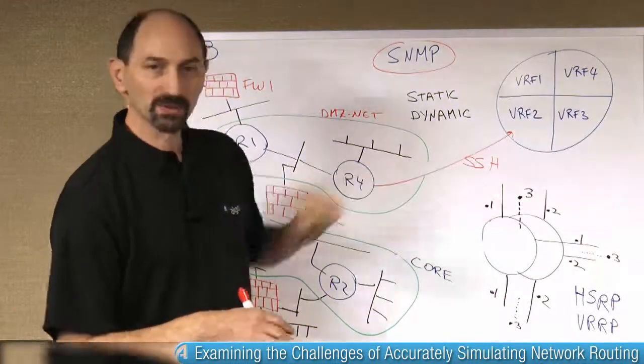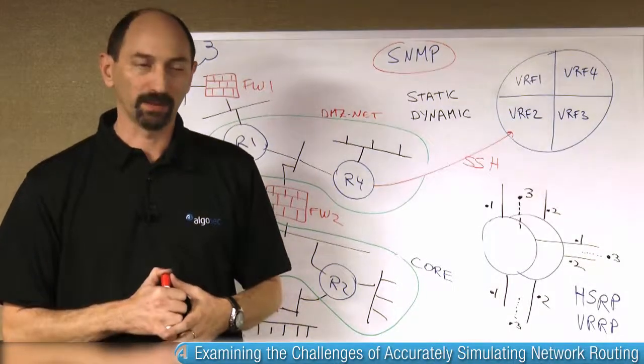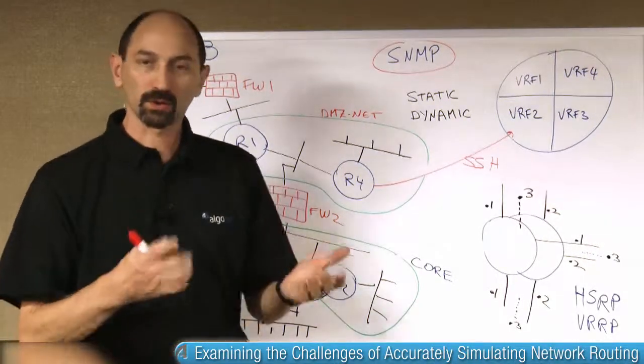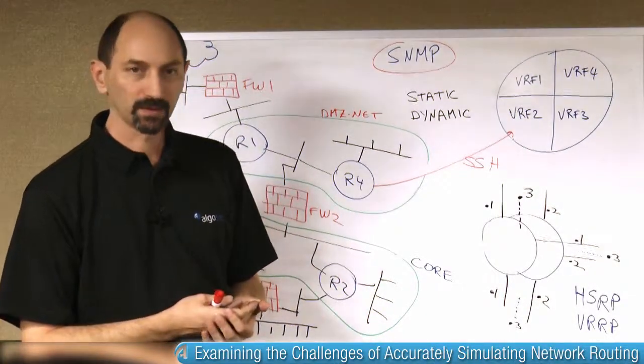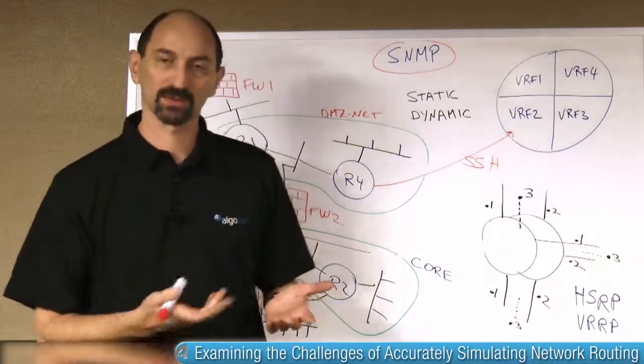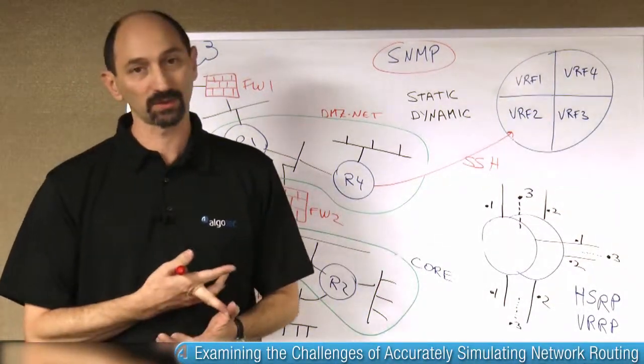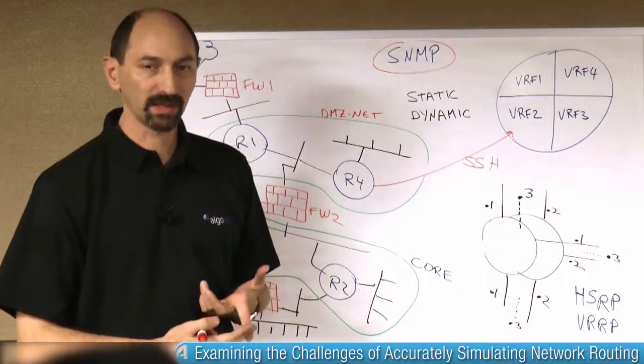But if you're using SSH, you have a different challenge that you have to worry about. And that is not all routes are equal. There are two broad classes of routes that a router manages. There are the static routes, and then there are the dynamic routes. Remember,